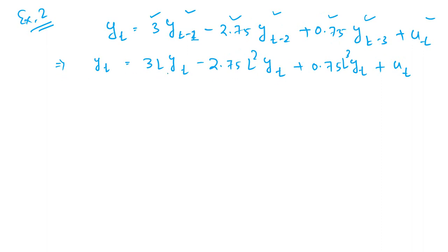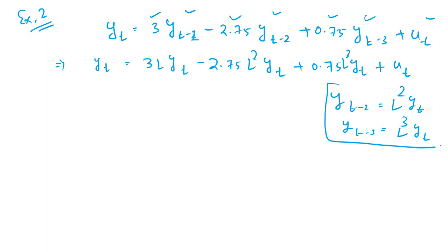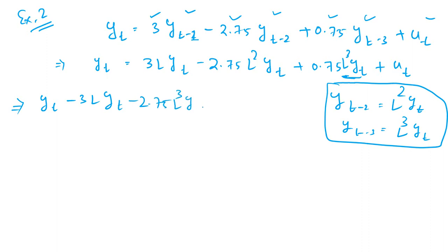This implies yt equals 3L yt minus 2.75 L-squared yt plus 0.75 L-cubed yt, since yt minus 2 is L-squared yt and yt minus 3 is L-cubed yt. Taking all terms to the left-hand side: yt minus 3L yt plus 2.75 L-squared yt minus 0.75 L-cubed yt equals ut.